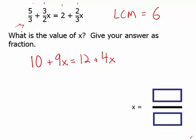So now we'll just solve, subtract 4x from both sides and we get 10 plus 5x equals 12. Subtract 10 from both sides, we get 5x equals 2.